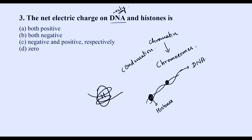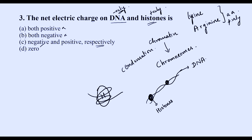So DNA is negative because of the phosphate backbone, and histone is positive because of the amino acids lysine and arginine. The options 'both positive' and 'both negative' are wrong. Option C — DNA negative and histone positive — is correct.